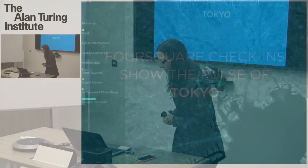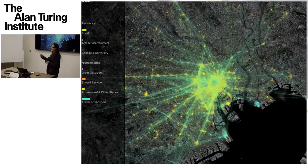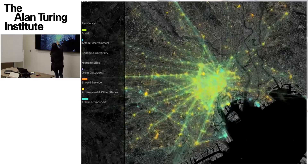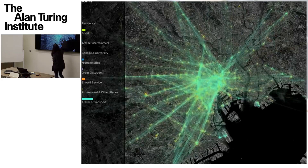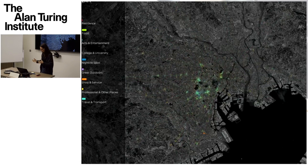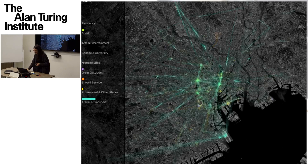We have worked a lot with Foursquare data — it's like Facebook but you tell your friends where you are by checking in. This is data from Tokyo: different colours represent different types of venues at different times of day. You can really see the activity of the city very clearly — the intensity, transport patterns, people draining out of the city and going back to sleep.